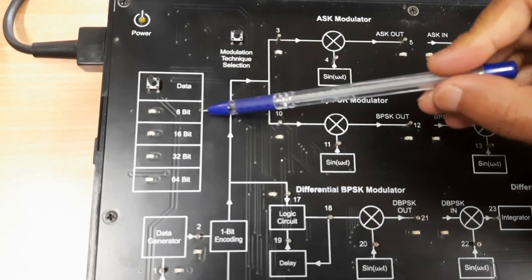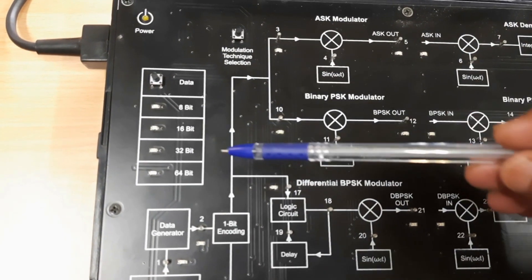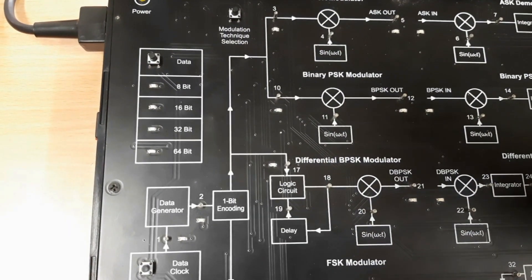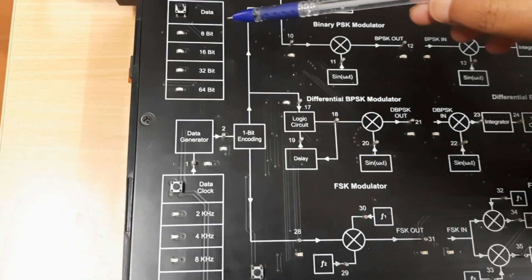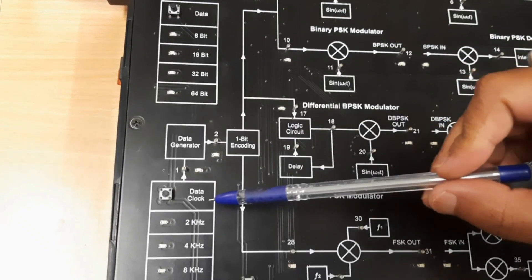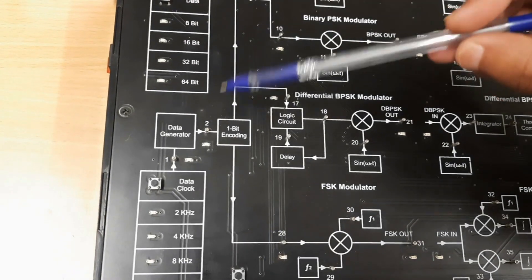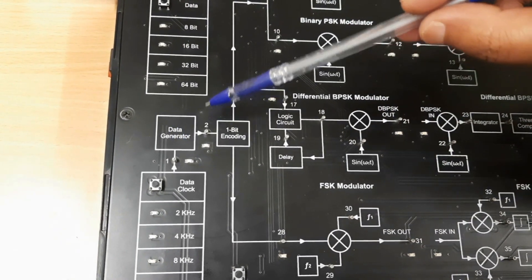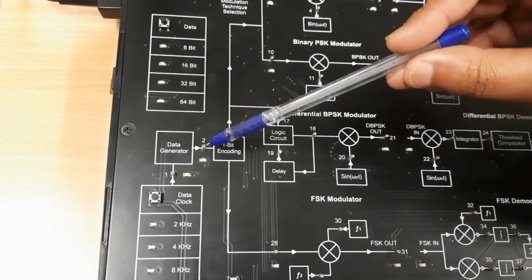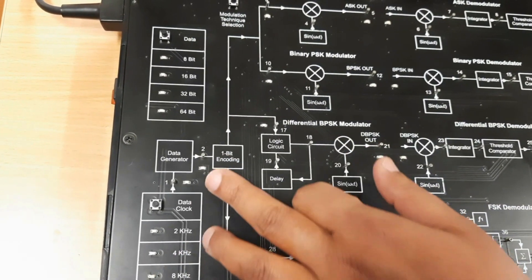There is a data selection key from which you can select different types of data: 8-bit, 16-bit, 32-bit, or 64-bit, as required. According to the selected data type, the data clock frequency is set. From the data generator, both the data type and clock will be selected and the data generated. Using the test panel, we can check the data pattern.